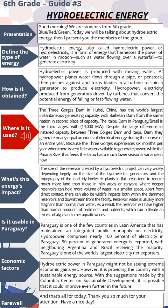Despite the large difference in installed capacity between the Three Gorges Dam and Itaipu Dam, they generate nearly equal amounts of electrical energy during the course of an entire year. This is because the Three Gorges experiences six months per year where there is very little water available, while the Paraná River that feeds Itaipu has a much lower seasonal variance in flow.